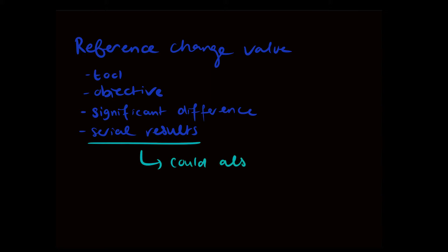Let's talk about the reference change value some more. It is a tool used to objectively assess if a significant difference has occurred between serial results in an individual. It can also be used to assess significance between a result and an upper reference limit, lower reference limits, or another cutoff value.